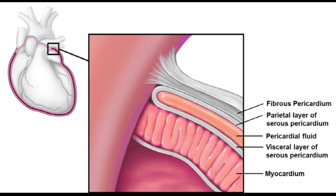The pericardium originates from the base of the heart from the arteries of the heart and then covers the whole heart. The pericardium forms a sac around the heart, and this pericardial sac encloses a fluid called pericardial fluid.